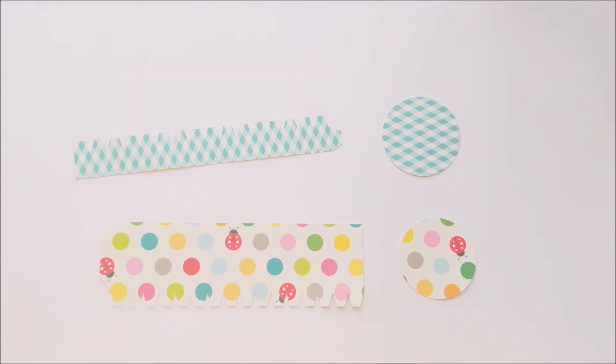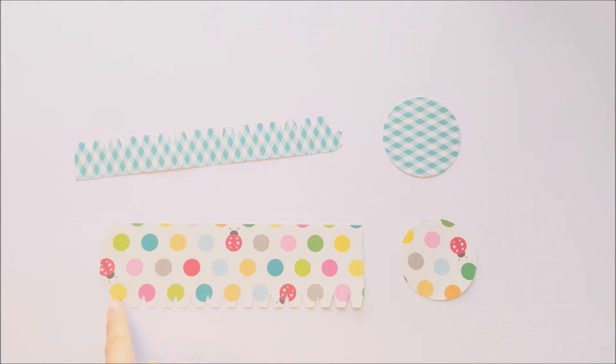If your box has decorative elements, you'll cut those out as well. Now you're going to begin by pre-folding these little tabs on both the box piece and the lid piece.